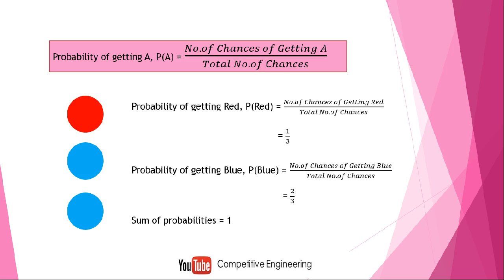I cannot take a ball of a different color. For example, if I want to take a green ball, we know there is no green ball. So the number of chances of getting a green ball is zero, divided by the total number of chances, which is three balls — so zero by three equals zero. This means the probability of getting a green ball is zero because there is no green ball.